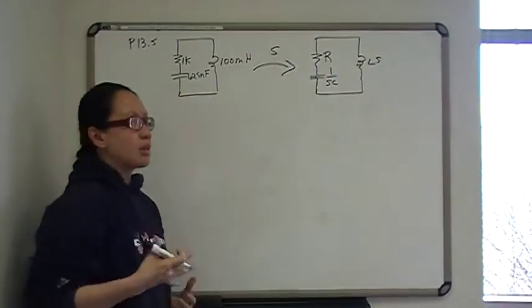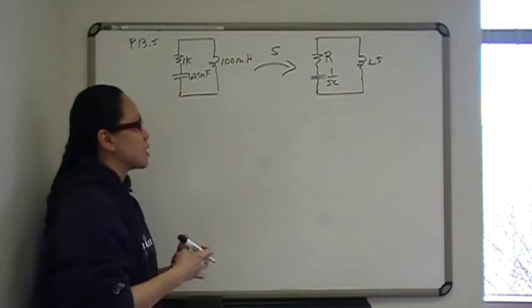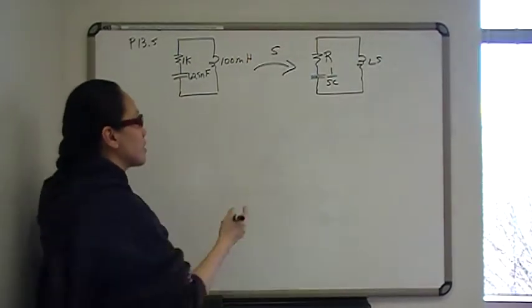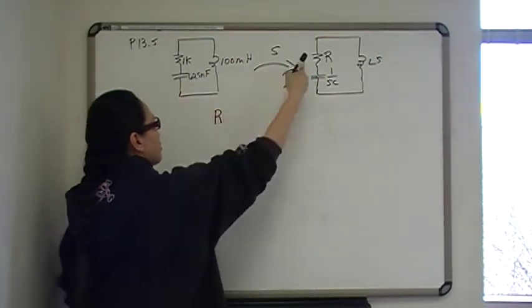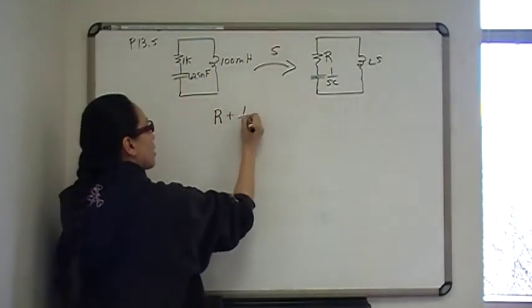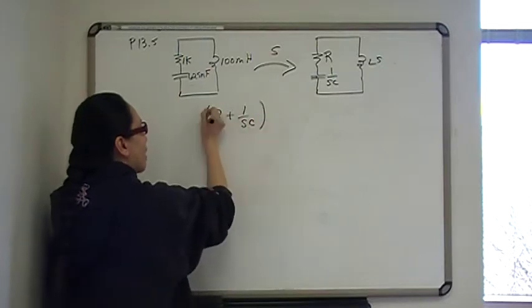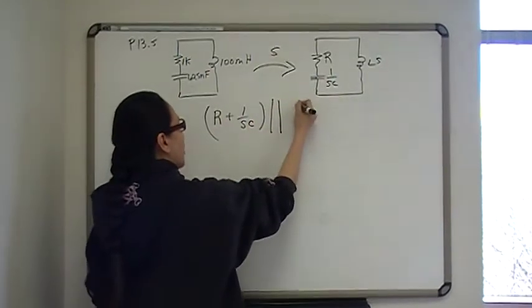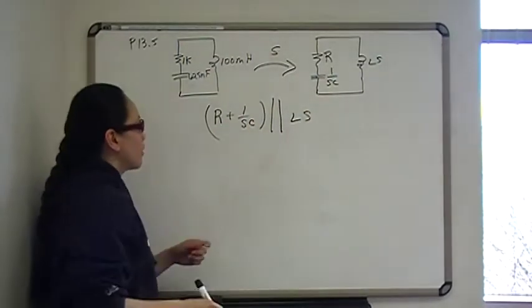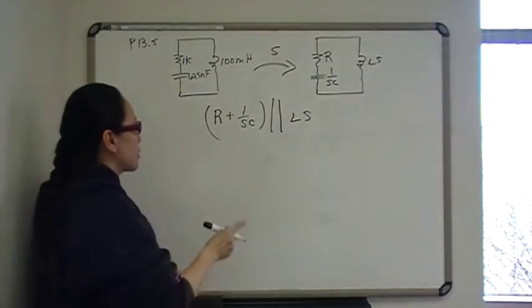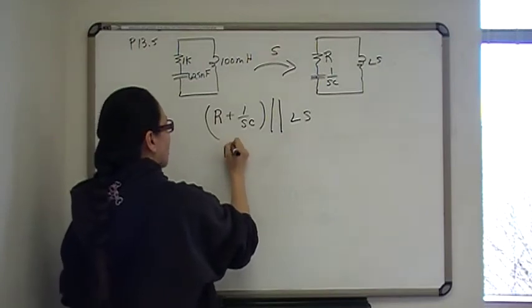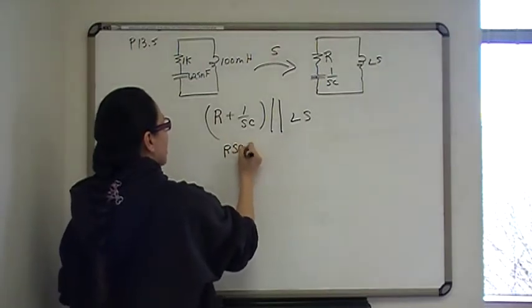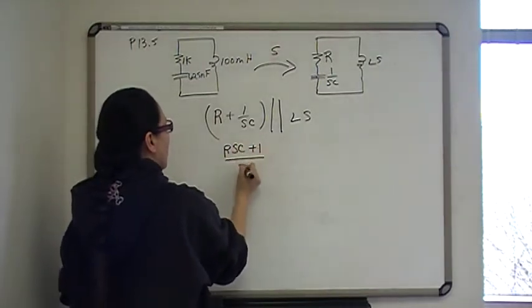And then from here, all of the laws of equivalent impedance apply. So this branch is going to be R plus 1 over SC, and that is in parallel with LS. First we're going to combine this into one common denominator. So the common denominator is SC, so this is going to be RSC plus 1 over SC.